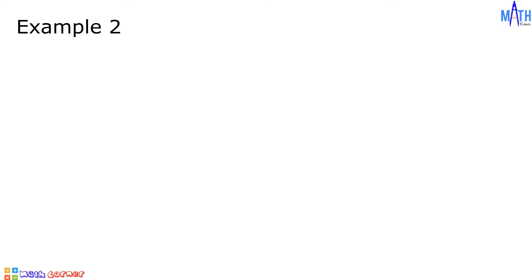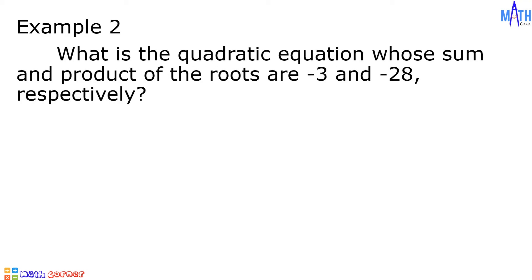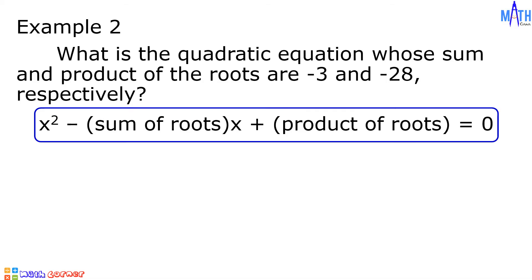Example number 2: what is the quadratic equation whose sum and product of the roots are negative 3 and negative 28 respectively? The sum of the roots is negative 3 and the product of the roots is negative 28.